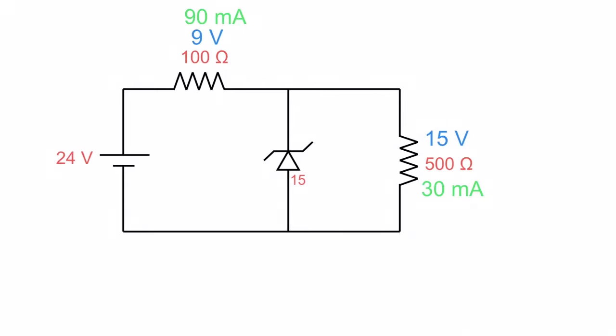And the only thing left to figure out is the Zener current. Well if up here I have 90 milliamps and there's a node here with 30 milliamps coming to this node and suddenly it becomes 90, that means that across this Zener I must have 60 milliamps flowing.